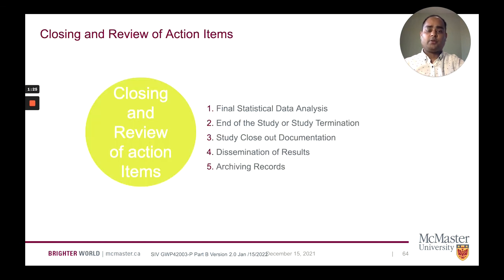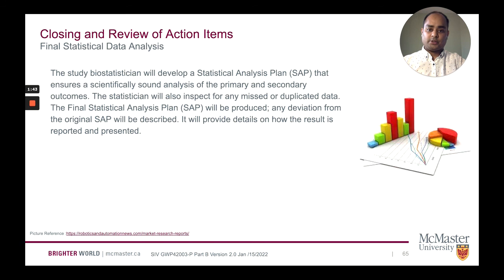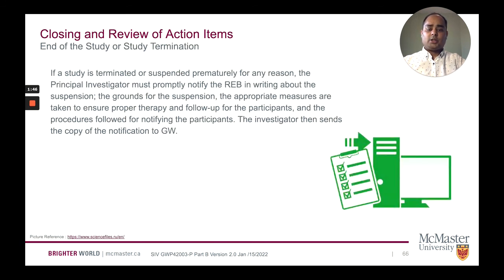Closing and review of action items. First, final statistical data analysis, SAP. The SAP should document any deviations from the original SAP and provide details on how the results are reported and presented. End of study or study termination: if a study is terminated or suspended prematurely for any reason, the principal investigator must promptly notify REB about the suspension, the grounds for suspension, appropriate measures taken to ensure proper safety and follow-up for participants, and the procedure followed for notifying participants. The investigator then sends a notification copy to GW.